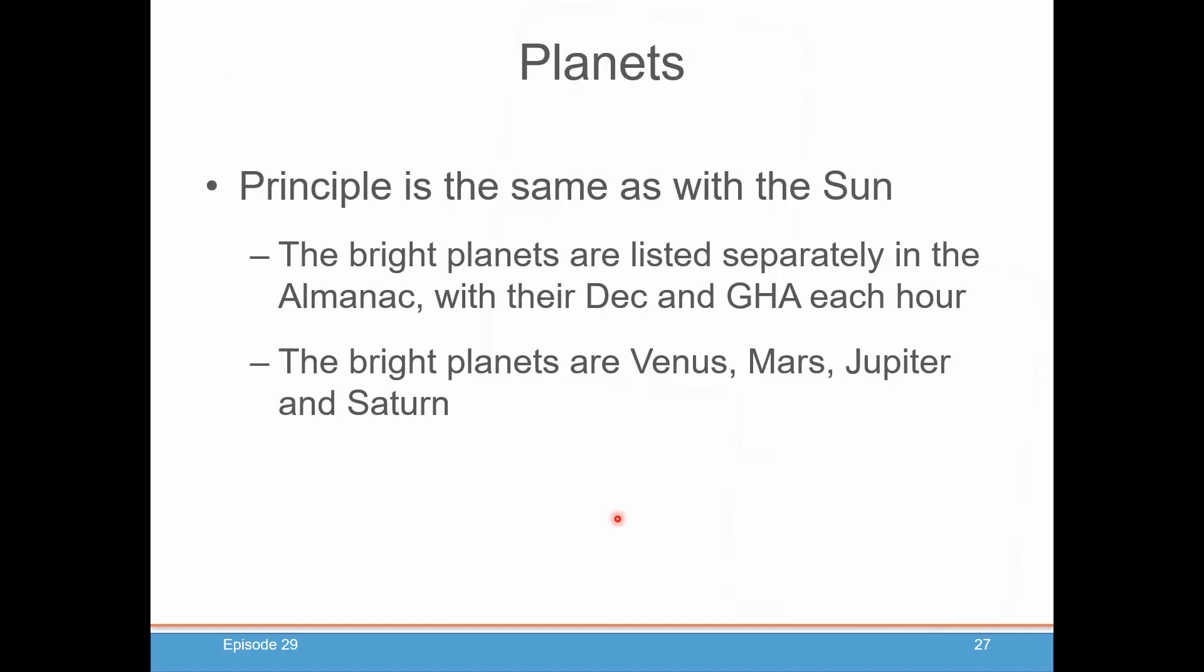So planets. The planets' celestial navigation principle is pretty much the same as the Sun. In the Almanac, you will find the bright planets are listed separately with their declination and GHA for each hour. Now, the bright planets are considered to be Venus, Mars, Jupiter, and Saturn. Obviously, Mercury can be seen sometimes, but because it is very difficult to see, it's not included in the Almanac. And you won't always be able to see Venus, Mars, Jupiter, and Saturn at night or in the morning. It depends on where it is in relation to the Sun. But if you can see them, we're going to show you how to find your line of position using them.